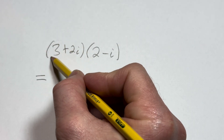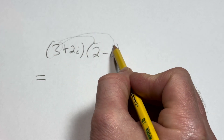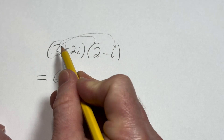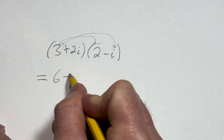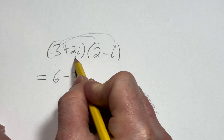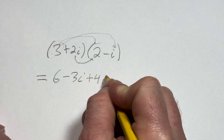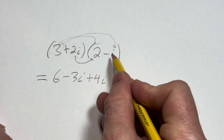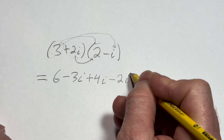We'll start by taking this 3 and multiplying it by both of these numbers — basically distributing. So 3 times 2 is 6, and 3 times negative i is negative 3i. Then we go to this number here: 2i times 2 is 4i, and 2i times negative i is negative 2i squared.